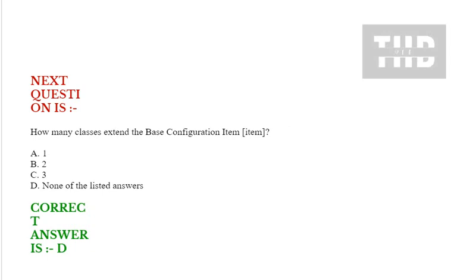Next question: How many classes extend the base configuration item (cmdb_ci)? Option A: One. Option B: Two. Option C: Three. Option D: None of the listed answers. Correct answer is Option D.